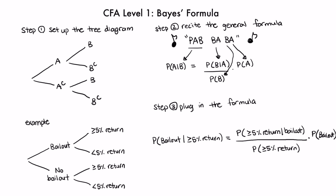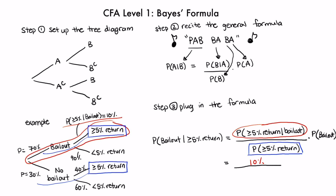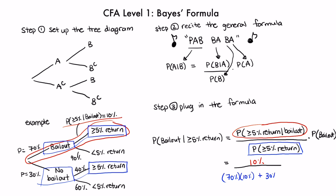From the tree diagram, the probability of at least a 5% return given a bailout — shown in the red circle — is 10%. The probability of earning at least a 5% return overall — the blue squares — covers the two branches where you earn at least 5%: the probability of bailout times at least 5% return, which is 70% × 10%, plus no bailout times at least 5% return, which is 30% × 40%. The probability of a bailout is 70%, the first branch. Plugging this in gives 54%.